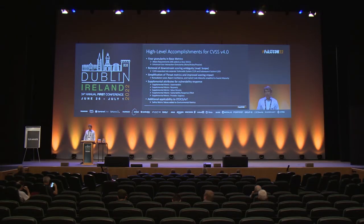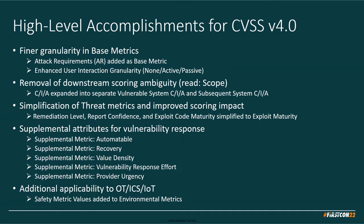The new thing is supplemental metrics. Base metrics are the intrinsic characteristics of a vulnerability. Supplemental metrics give you just-in-time additional information that may or may not be required to make a decision on whether to patch. We've added supplemental metrics: automatable, recovery, value density, vulnerability response effort, and provider urgency. These align quite well with SSVC — a decision tree framework you may have seen presented.